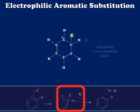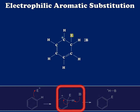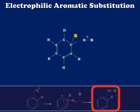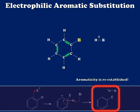Now the next step in the reaction involves the introduction of a base. And this can be anything that's even remotely basic — it's usually a solvent molecule, something like that. Anything that can accept that hydrogen from the tetrahedral carbon is likely to do so, because in doing so it gives the ring a method by which it can become aromatic again. Let's watch that happen now. Our base has abstracted the proton, and the electrons responsible for that C-H bond are now back in the aromatic portion of the ring in a pi molecular orbital. So here we've reestablished aromaticity, and that's what drives this reaction to completion.